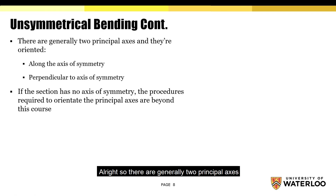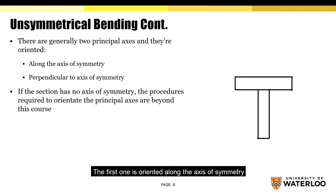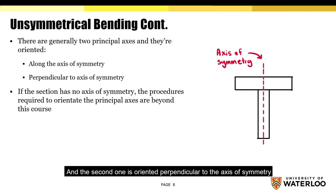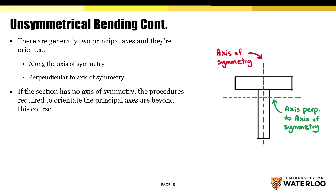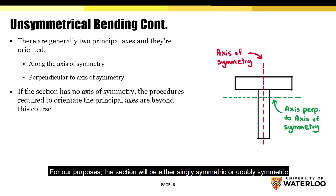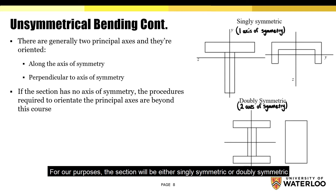So there are generally two principal axes. The first one is oriented along the axis of symmetry, and the second one is oriented perpendicular to the axis of symmetry. For our purposes, the section will either be singly symmetric or doubly symmetric, so it'd be pretty easy to figure out where the axes are located.